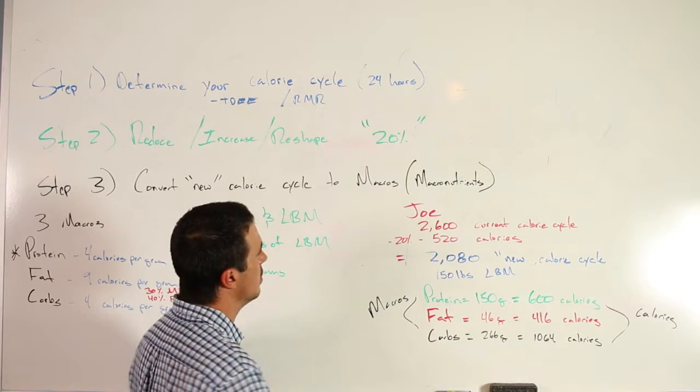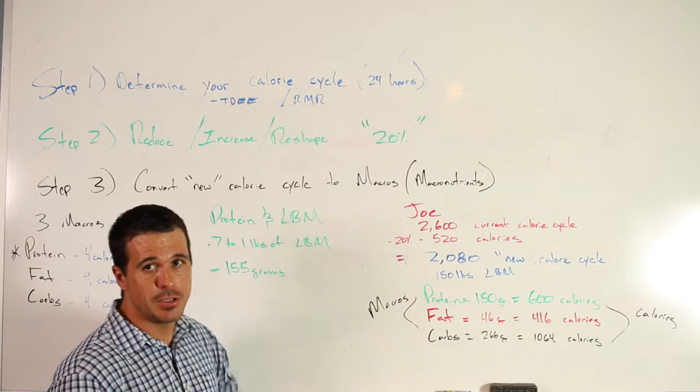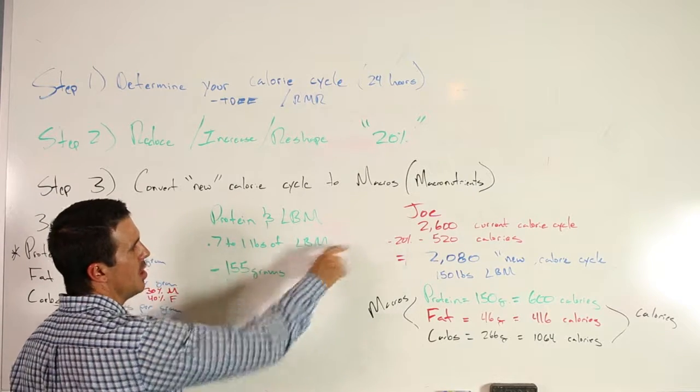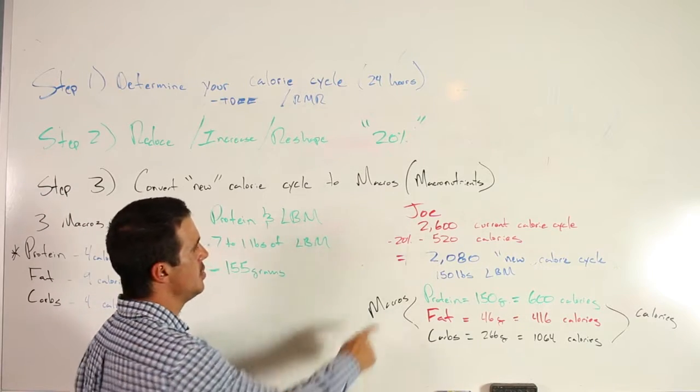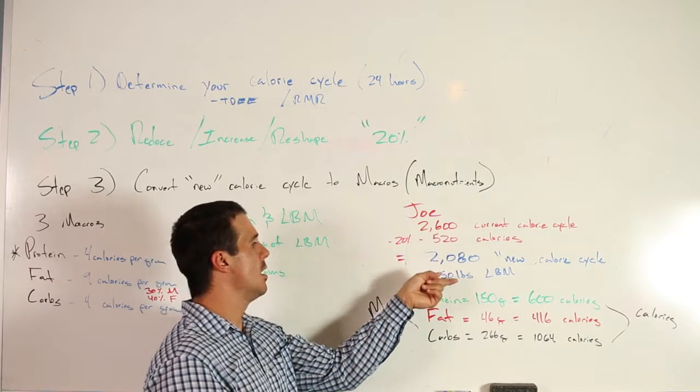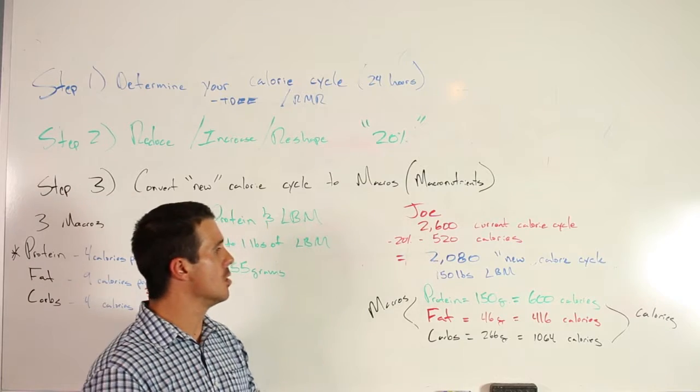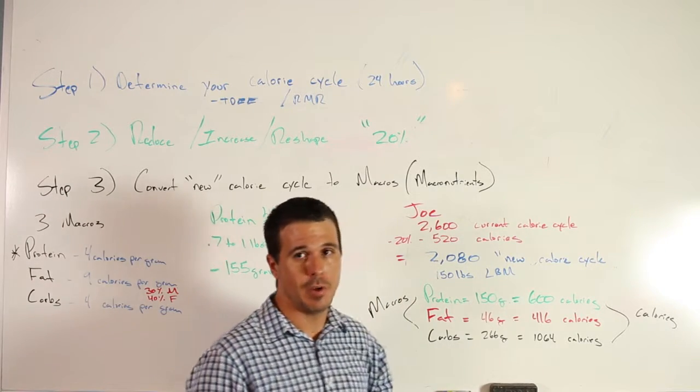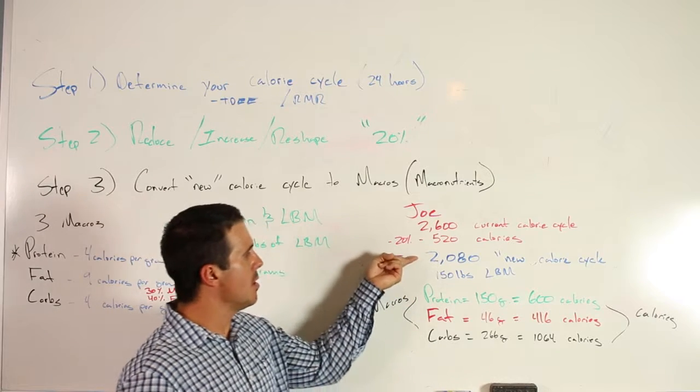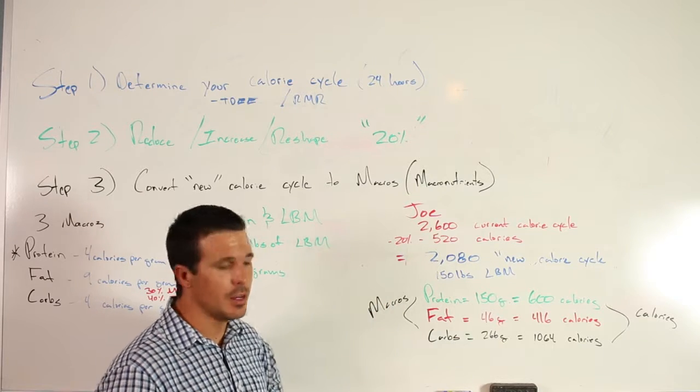Let's use Joe as an example. Joe's current calorie cycle is 2600 calories a day. Joe wants to lose weight, so we're going to reduce that number by 20%, which is 520 calories, making Joe's new calorie cycle 2080. Below I have 150 pounds of lean body mass. There's ways you can formulate this - to keep things moving along I'm not going to formulate it right now, but if you have questions you can email us and we'll gladly show you how to figure this out.